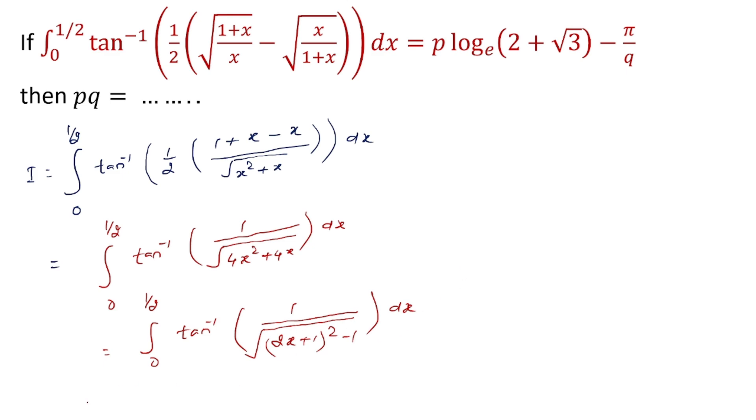Now substitute: let 2x + 1 = sec²θ - 1, that is sec θ. So 2x + 1 = sec θ and dx = (sec θ tan θ)/2 dθ. When x = 0, θ = 0, and when x = 1/2, θ = π/3.